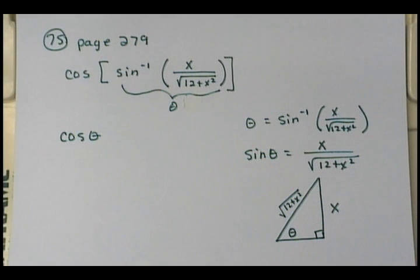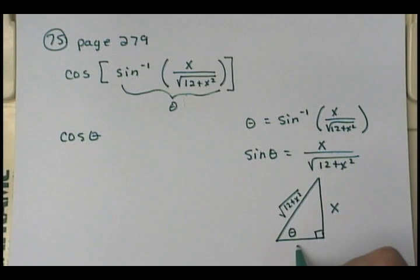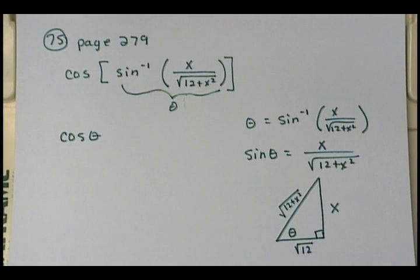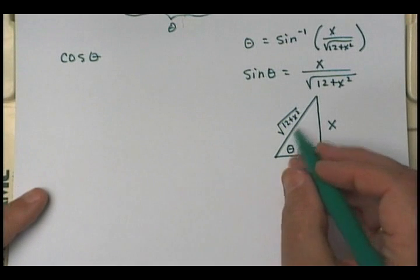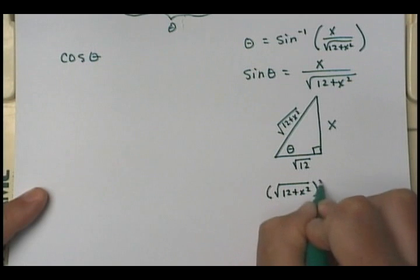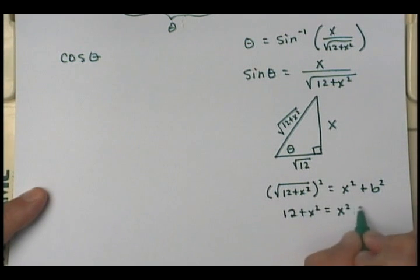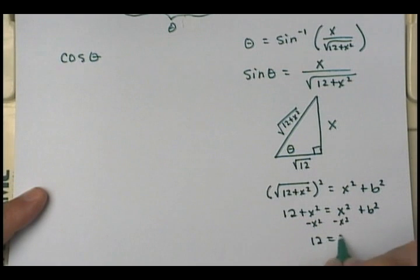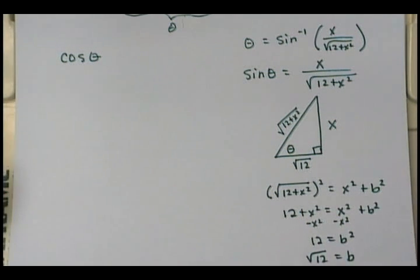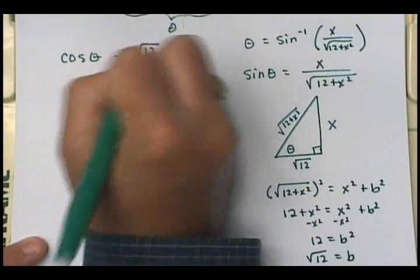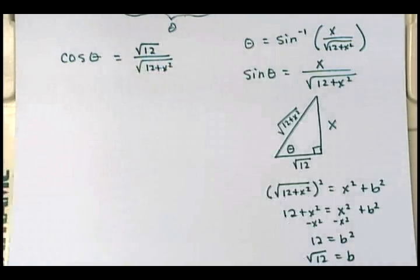So the opposite side is x and the hypotenuse is square root of 12 plus x squared. What's the adjacent side? Using the Pythagorean theorem: square root of 12 plus x squared, squared, equals x squared plus b squared. That gives 12 plus x squared equals x squared plus b squared — the x squareds cancel, so b squared equals 12, meaning the adjacent side is square root of 12. So cosine of theta equals square root of 12 over square root of 12 plus x squared, which you can write all under one radical.